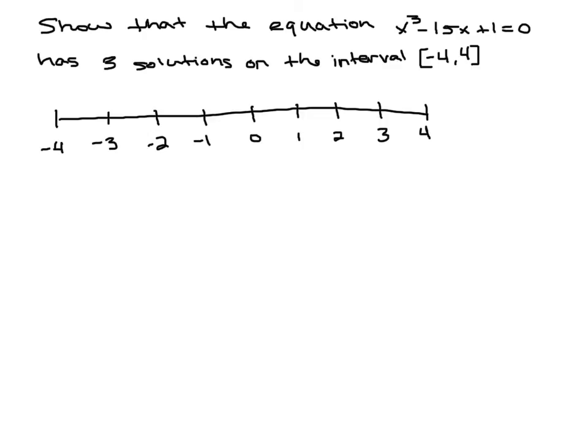We just talked about the intermediate value theorem and continuity on a closed interval. Here we're being asked to show that the equation x³ - 15x + 1 = 0 has three solutions on the interval from negative 4 to 4. Remember, solutions mean that it crosses the x-axis.